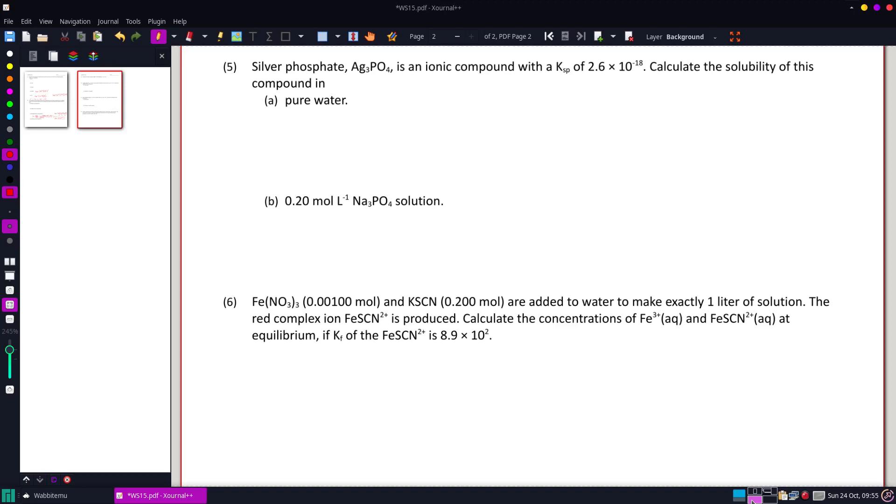Alright, on number five, we are looking at silver phosphate has a Ksp of 2.6 times 10 to the negative 18th. And we want to calculate its solubility at first just in pure water.